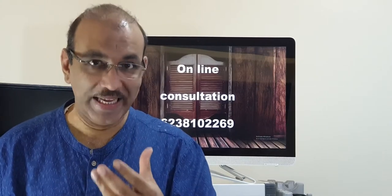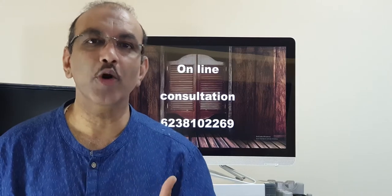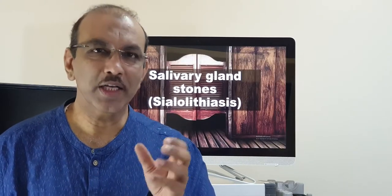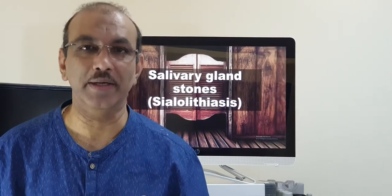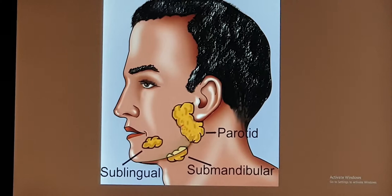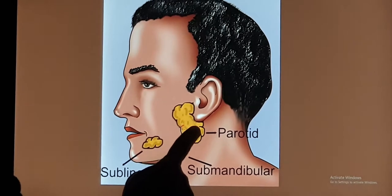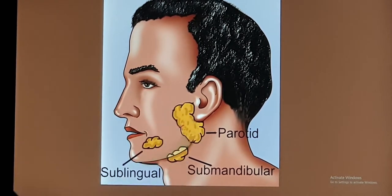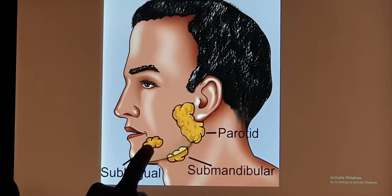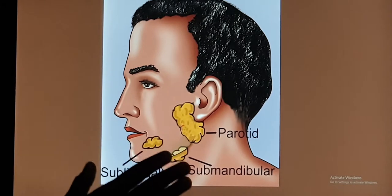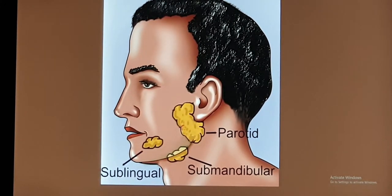The saliva which is produced daily is produced by three important salivary glands. We have three sets: the parotid gland, seen just in front and below the ears; the submandibular gland, just below the mandible; and the sublingual gland, which is below the tongue. We have the same pair on the other side also. The saliva secreted from all of these totals approximately 1.5 liters per day.